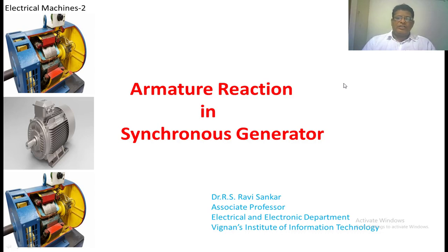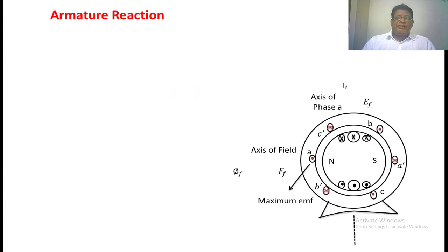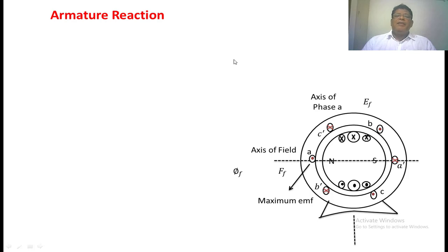In this lecture, we are going to discuss about armature reaction. Already we have studied the armature reaction in DC generator as well as a motor. The armature reaction is defined as the effect of armature flux on the main flux. Another definition for armature reaction is the effect of armature MMF on the main field MMF.